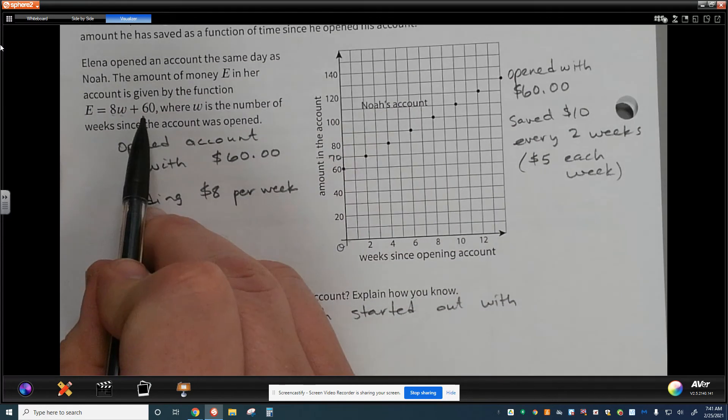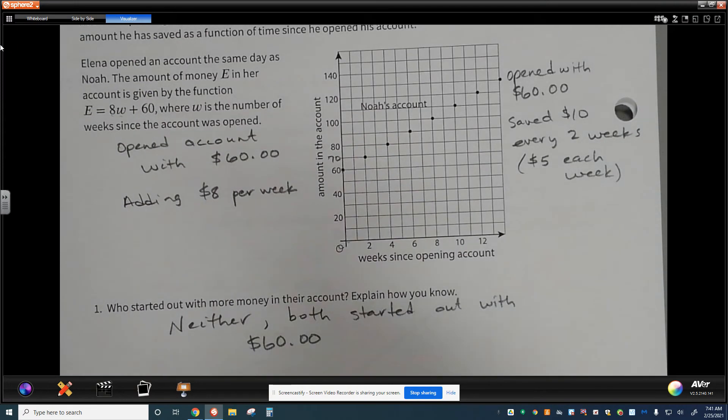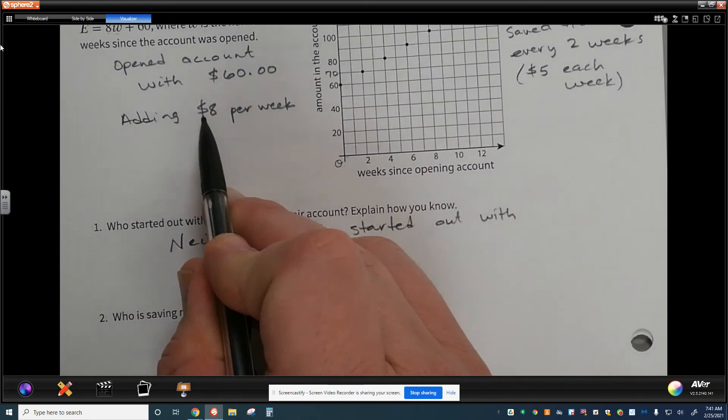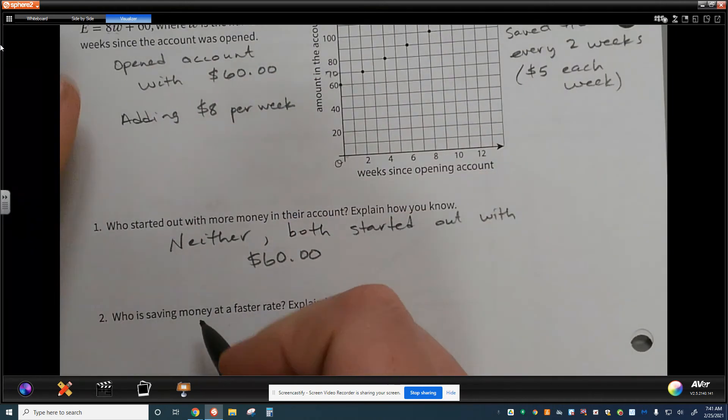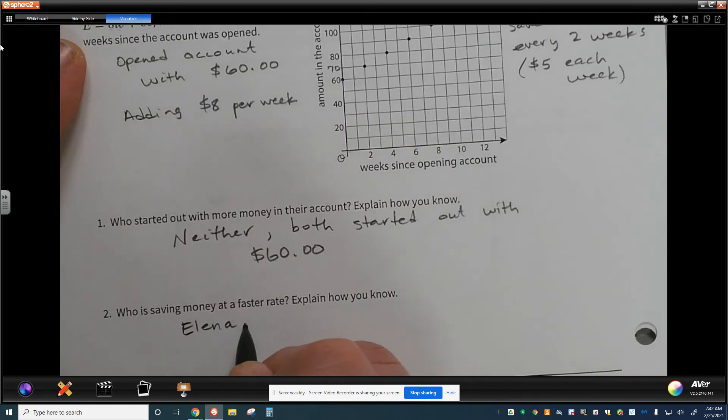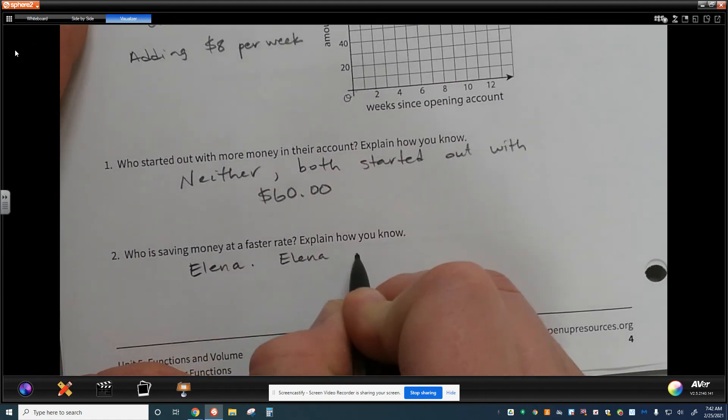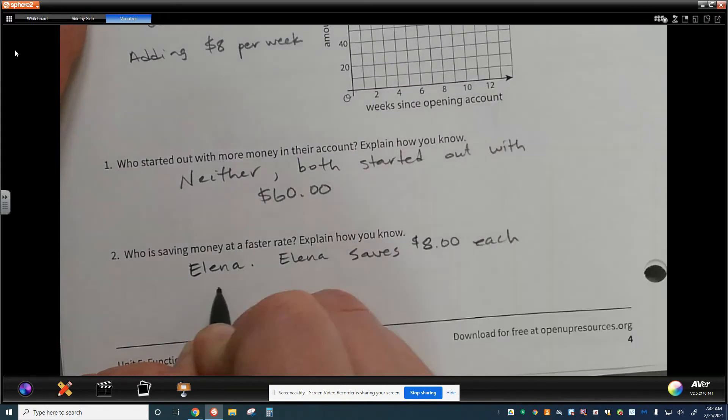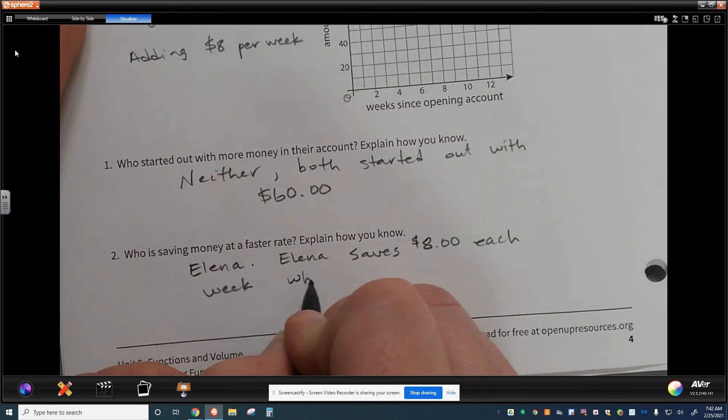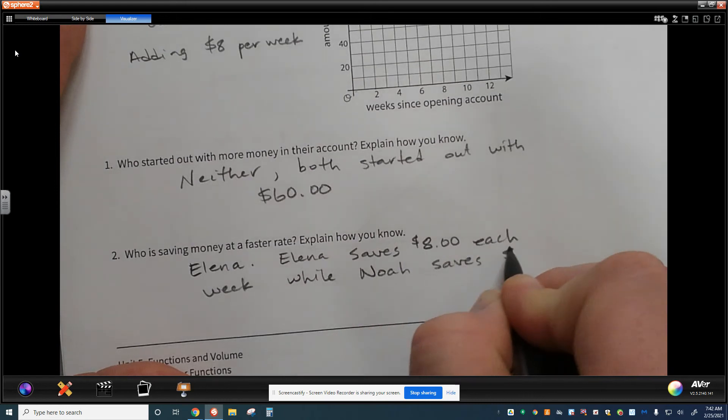I see that in the y-intercept of Elena's equation. And I see that in the y-intercept with Noah's graphed values. So who's saving money at a faster rate? We would have to see right here that Elena is saving $8 per week and Noah is saving $5 per week. So we could say Elena. That's who saves money at a faster rate. There's my claim. My evidence. Elena saves $8 each week, while Noah saves $5 each week.